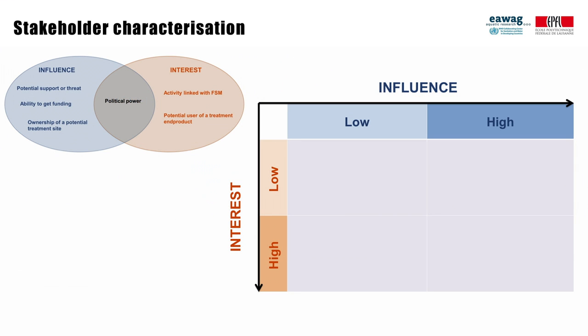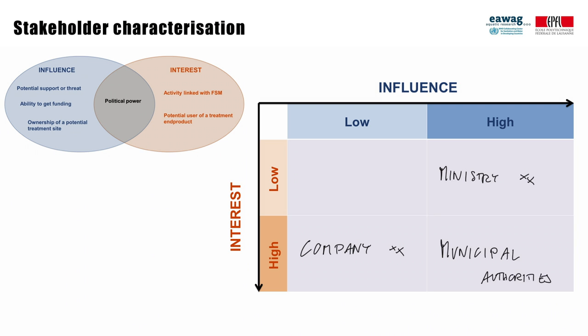Recognizing this, you can draw an influence-interest matrix. For example, if a small company providing an emptying service has an interest in our new FSM scheme but not much influence, we put it in the low-influence, high-interest quadrant. A national entity may have strong influence — for example for delivering permits or funds — although it does not have direct interest in the project, so we would place it there. The municipal authorities, as we saw, have both an interest and influence, so we put them accordingly.